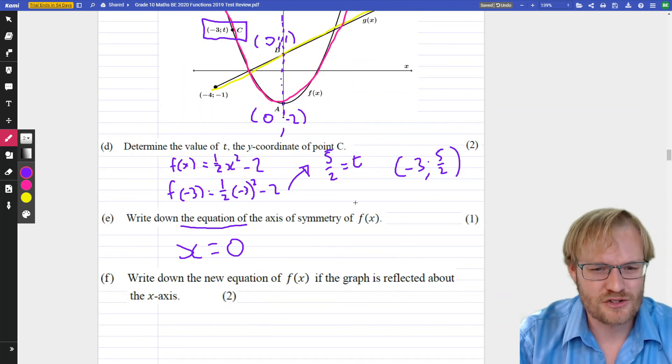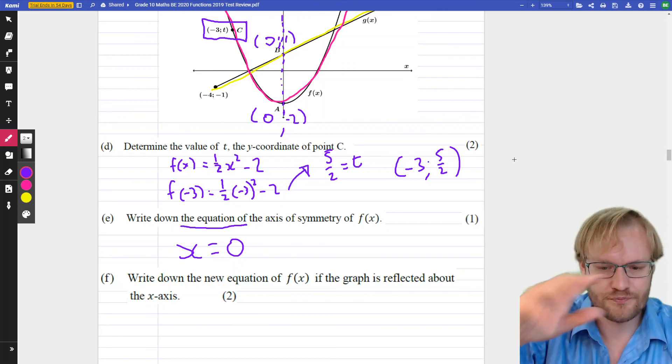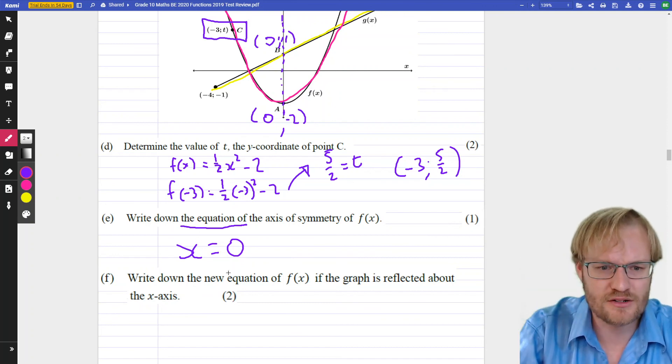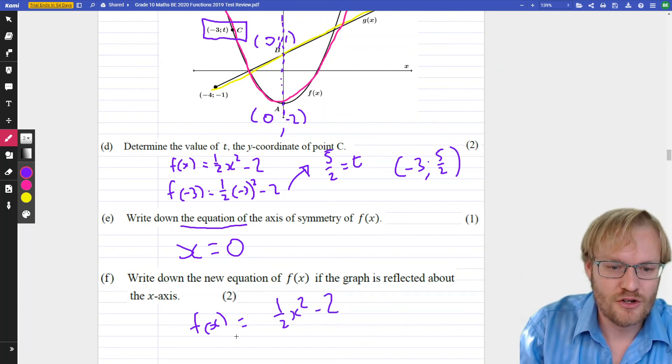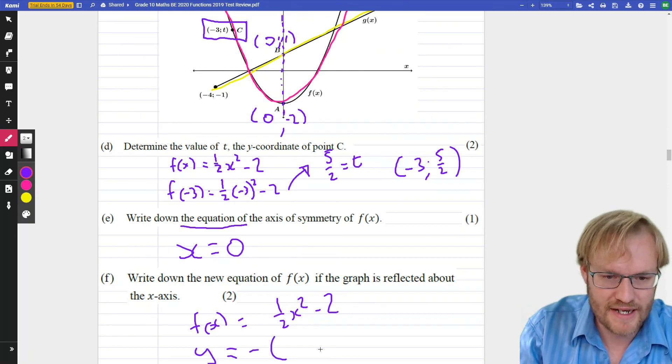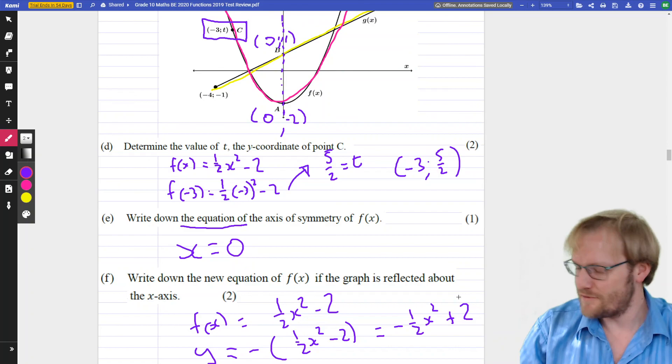Okay, and the last bit we're going to look at in this question. Write down the new equation of f(x) if the graph is reflected about the x-axis. Well, if we reflect about the x-axis, then we just make the whole thing negative. So f(x), we know, is (1/2)x² - 2. So all we need to do is go y = -(1/2)x² - 2. So we're just going to distribute this negative into the brackets. And we've got -(1/2)x². Negative times a negative is a positive. And there we go. Bye-bye.